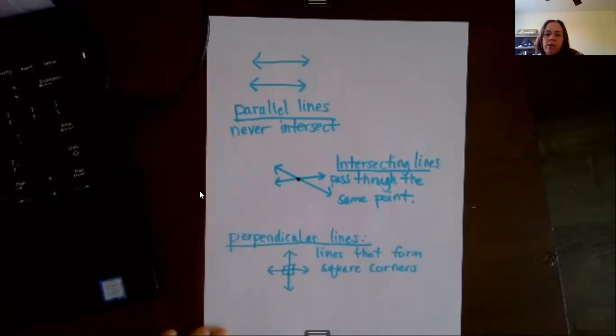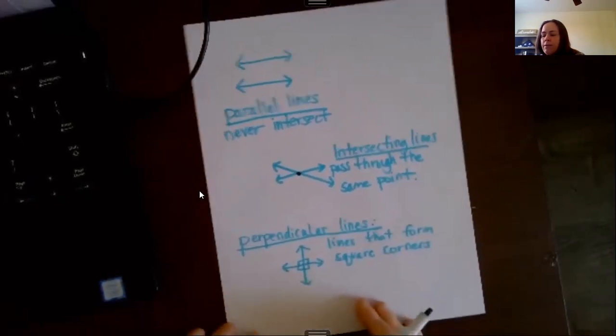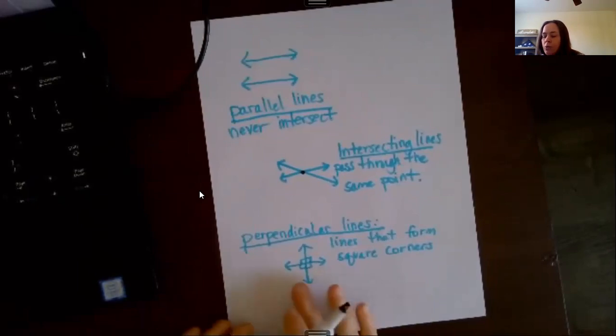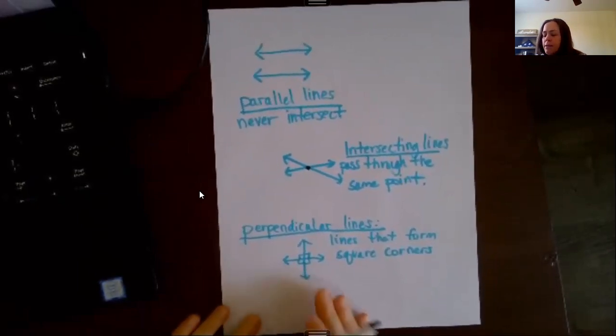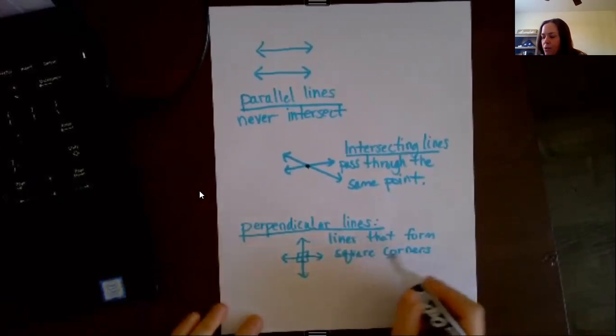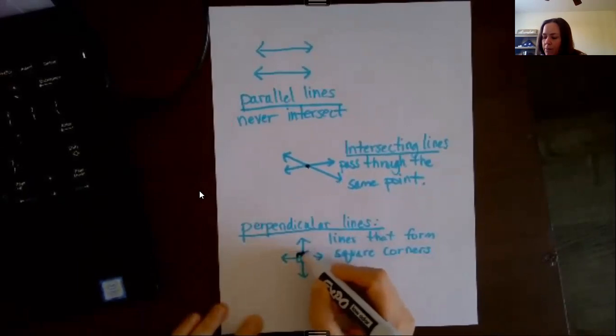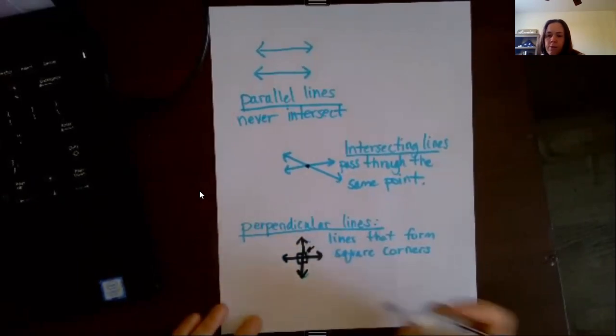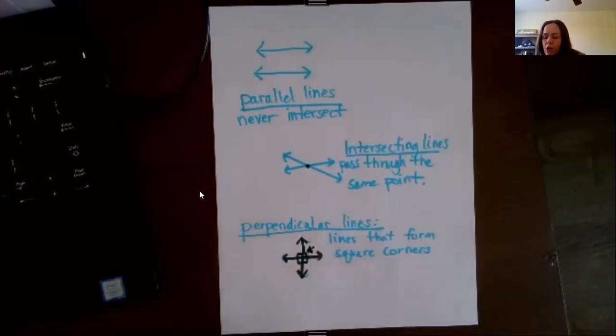That sometimes gets confused with perpendicular lines, which do intersect, but perpendicular lines make these corners. Usually if something's perpendicular, you'll see these little kind of boxes—they'll put a little box there. That helps you know that those are perpendicular lines, not just intersecting lines, because sometimes it's hard to tell.